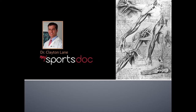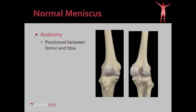This is Dr. Clayton Lane. In this video I will discuss the discoid meniscus. Let's look first at the normal meniscus. The meniscus is what I term a gasket interposed between the femur and the tibia. You can see the lateral meniscus here and the medial meniscus here.